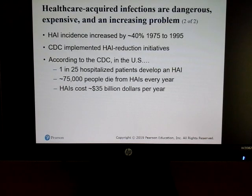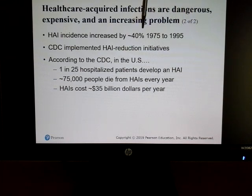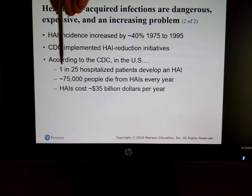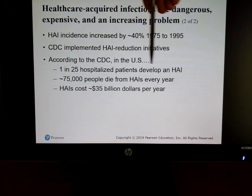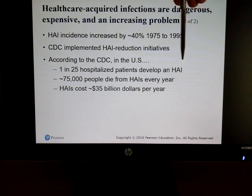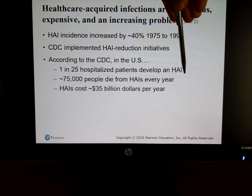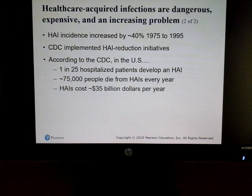In the U.S. alone, hospital-acquired infections increased over the 20-year span from 1975 to 1995 by 40 percent. The CDC estimates that 1 in 25 people will develop an infection while in the hospital, 75,000 die every year from those infections, and it costs somewhere around $35 billion per year.